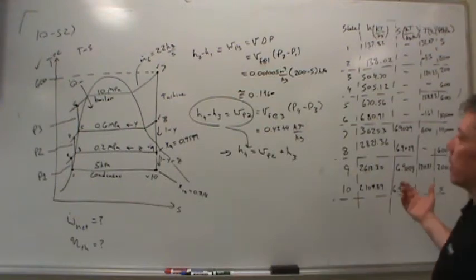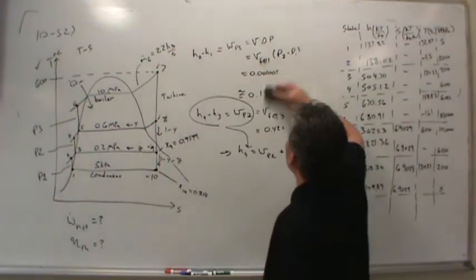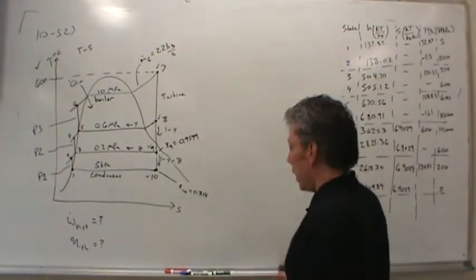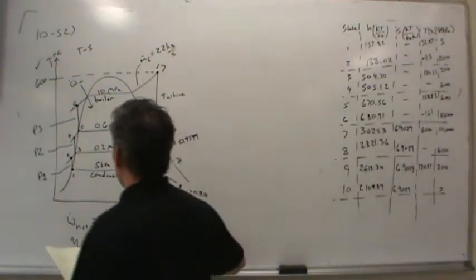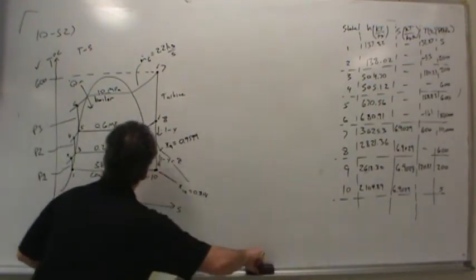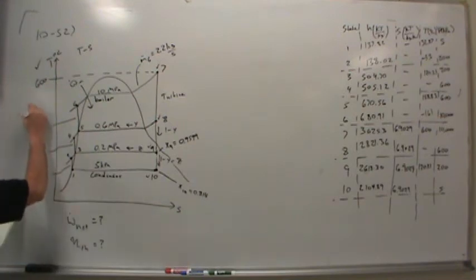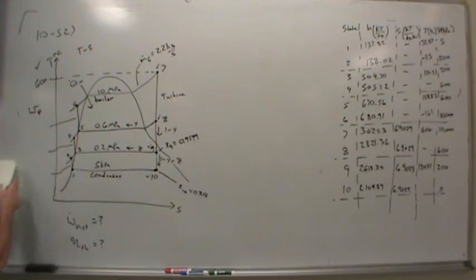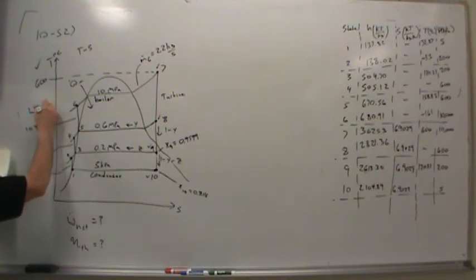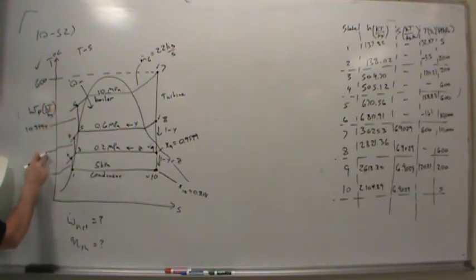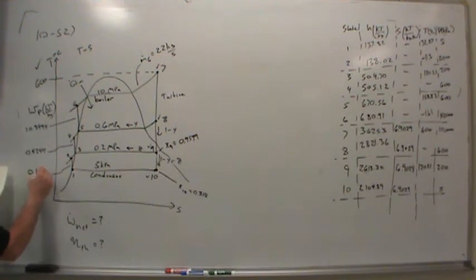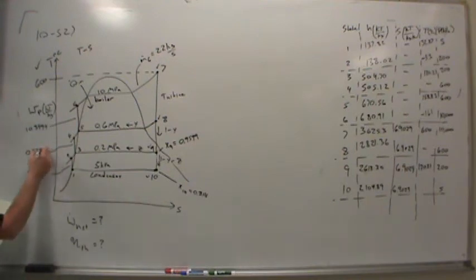Now you can say we've almost solved everything, because we have all the enthalpies. But there's a little bit more work to perform. I should jot down the amount of specific work that each pump requires. The specific pump work for pump 3 is 10.3494 kilojoules per kilogram. For pump 2 it's 0.4244, and for pump 1 it's about 0.1960 kilojoules per kilogram.